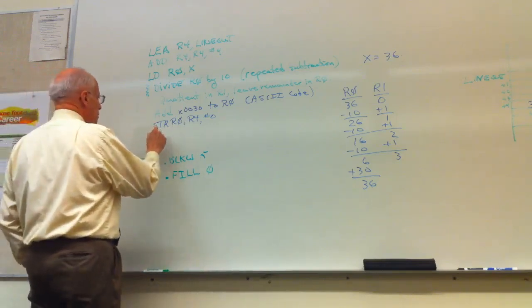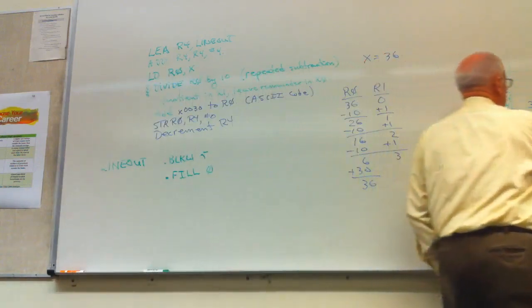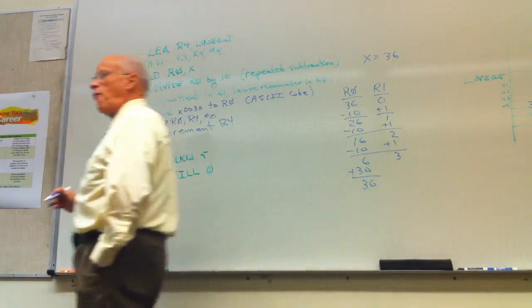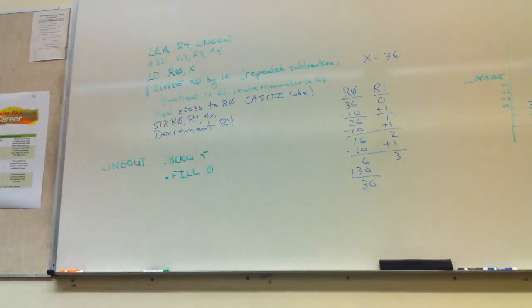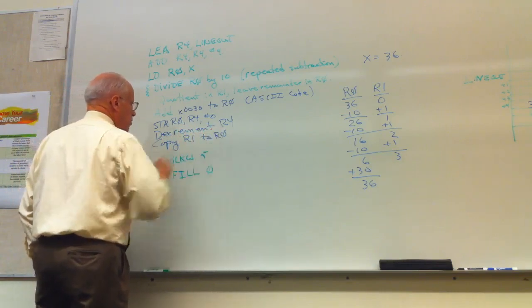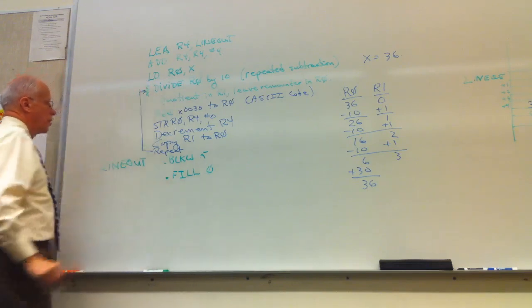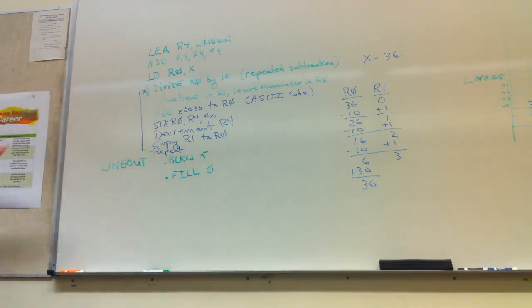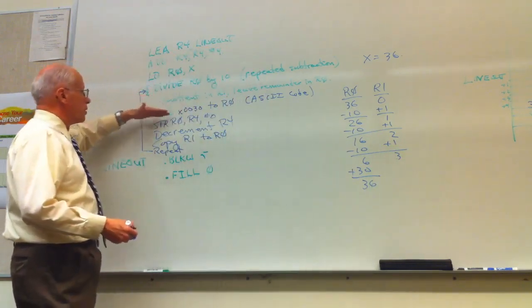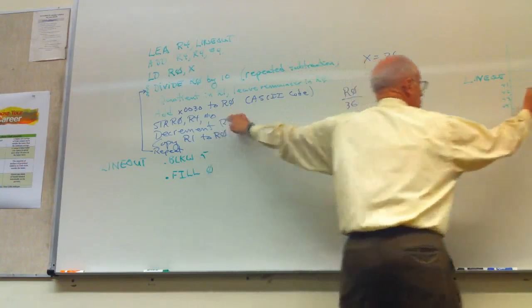Now I need to decrement register four. So register four now backs up. It's now looking at this location. Copy register one to register zero and we repeat up to here. We divide by ten until we get a remainder. In this case, it's just going to be a three. I won't actually end up dividing. I'll get a quotient of zero. But then I get down here. I add the three zero to the three and store it. That goes now in here.